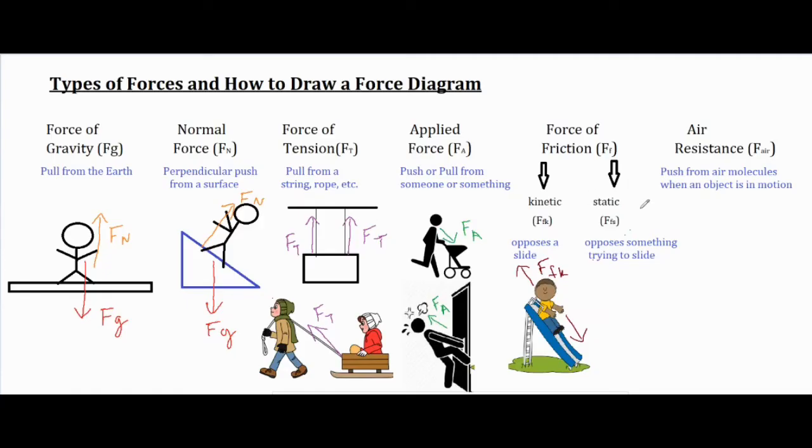Now for static friction, static friction is opposing something trying to slide. So for example, if this person sat on the slide and they aren't sliding, then you would call that FFs to show that something is trying to slide.